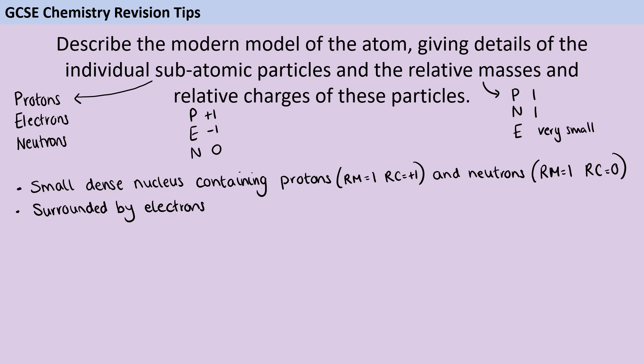Then I'm going to say that surrounding that nucleus there are electrons and they of course have a very small relative mass and a relative charge of minus 1 and they're found orbiting in shells.